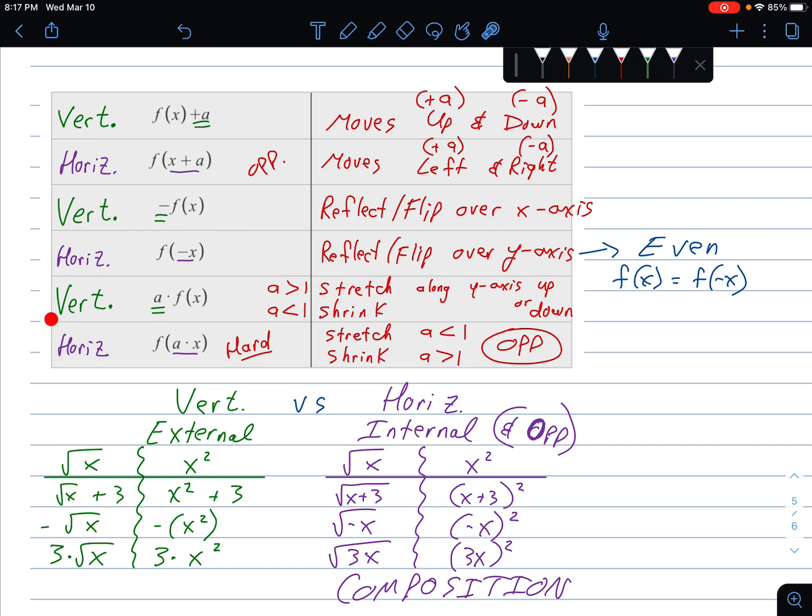We noticed that all of my vertical changes were external changes, as we see down here, always external, and my horizontal changes were always internal. And they were opposite of what we thought we were going to do. So plus a actually meant to the left, minus a actually meant to the right.